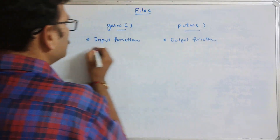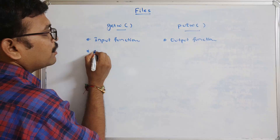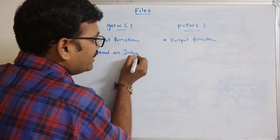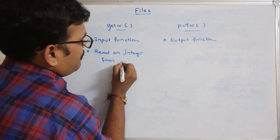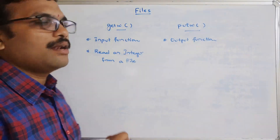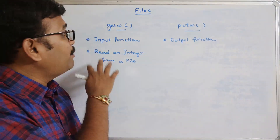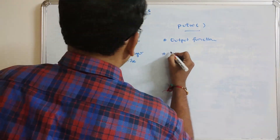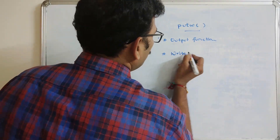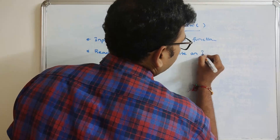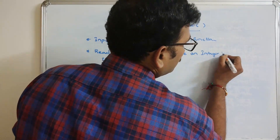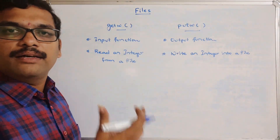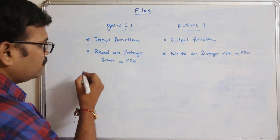The input function getw is used to read an integer from a file. So these two functions are used in the files concept. getw is used to read an integer from a file, and putw is used to write an integer into your file. This function is used to write the integer into a file.